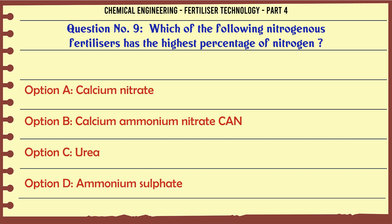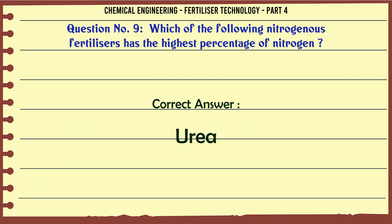Which of the following nitrogenous fertilizers has the highest percentage of nitrogen? a. calcium nitrate, b. calcium ammonium nitrate (CAN), c. urea, d. ammonium sulfate. The correct answer is: urea.